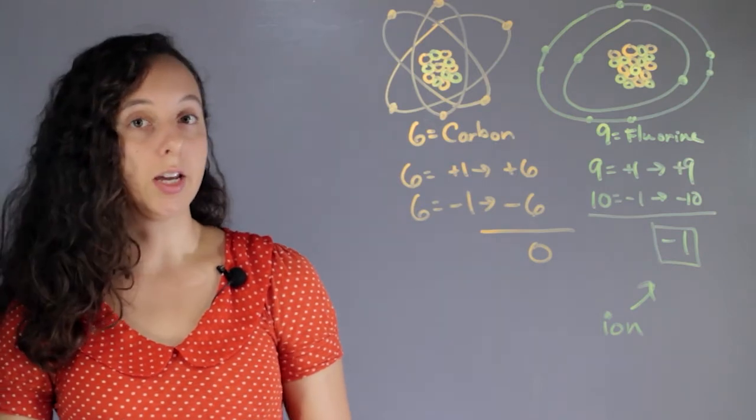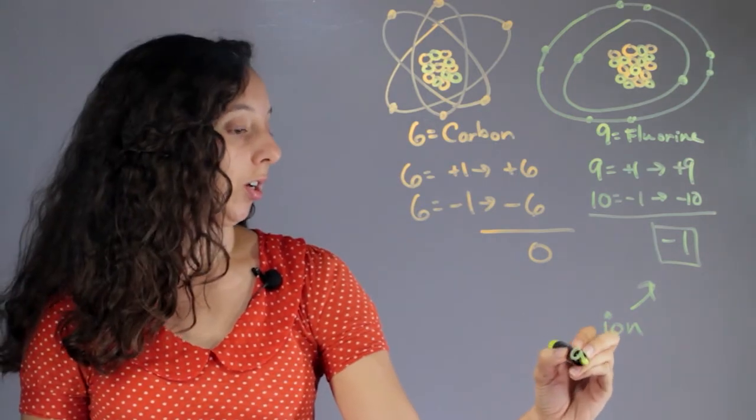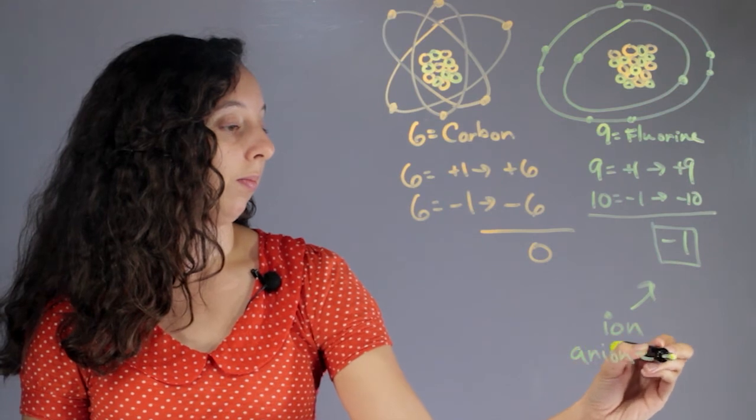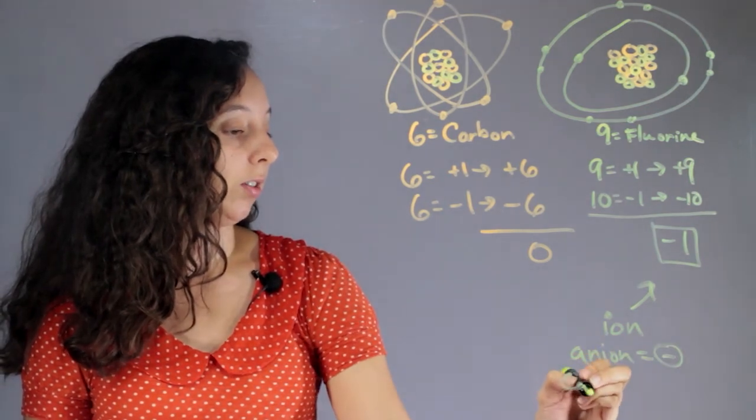And so, an ion can be negative, and it'll be called an anion, and if it's positive, it's called a cation.